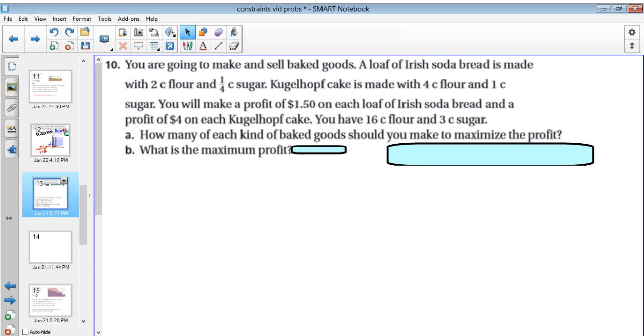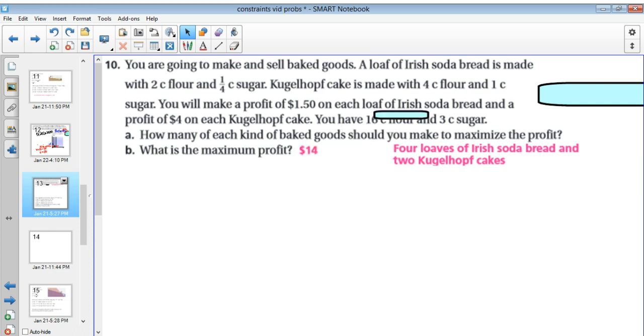Okay. So we tried it out and we should have found out how many kinds of each baked good should you have to maximize profit. You should do four loaves of Irish soda bread and two Kugelhopf cakes. What is the maximum profit? The maximum profit would be $14 if you're selling these baked goods. If you got that right, fantastic. Stop the video and you're done. If not, stick around. I'll explain it.